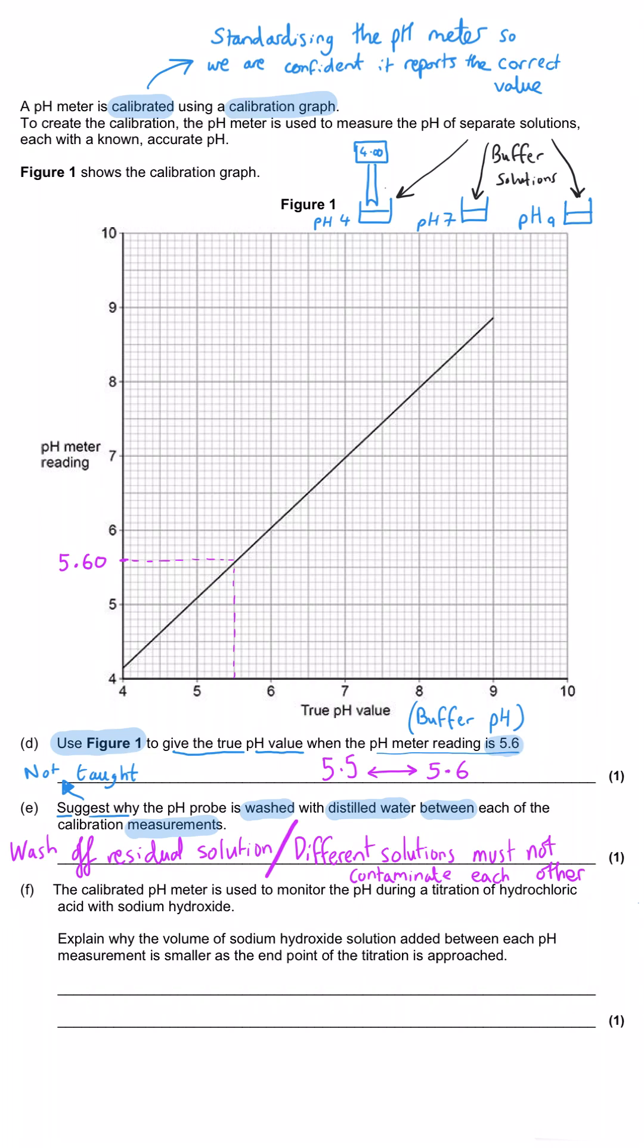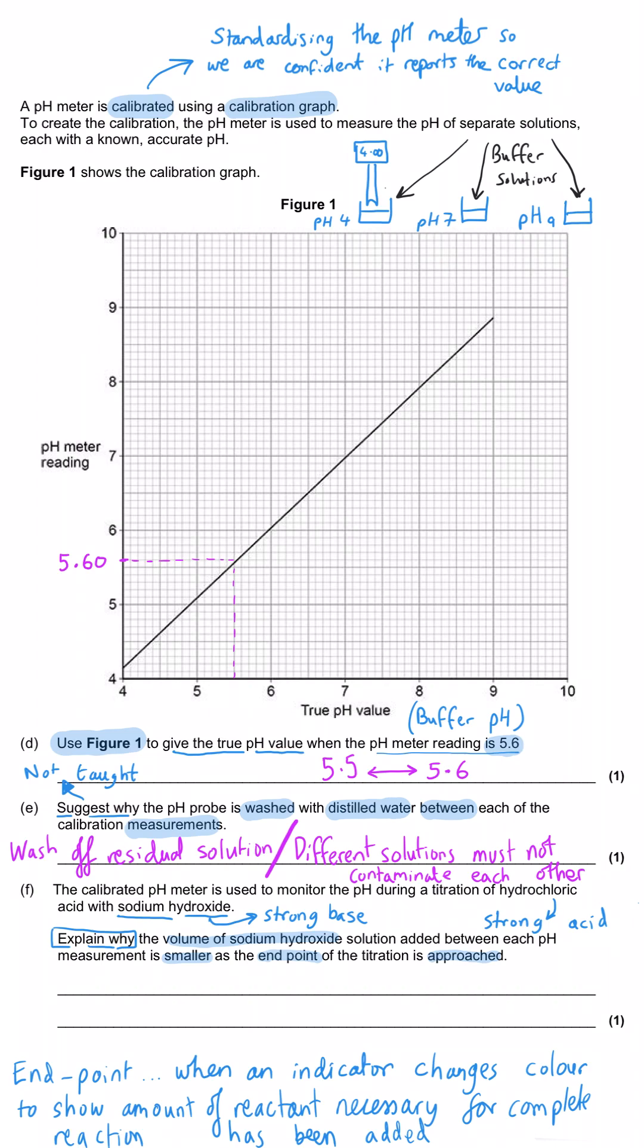The calibrated pH meter is then used to measure the pH during a titration of hydrochloric acid, strong acid, with sodium hydroxide, a strong base. We're asked to explain why the volume of sodium hydroxide added between each pH measurement is smaller as the end point of the titration is approached. The idea here is that you don't want to miss the end point. If you add it in two cm cubed portions at a time early on during this titration, then you're very likely to overshoot. So you would probably go up in twos early on, then maybe 0.2s closer to the end point, and probably 0.1s at the last minute. You don't want to miss the end point because that's where there is this large change in pH.